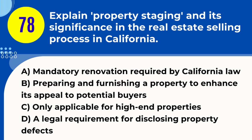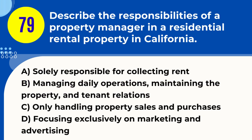Question 78. Explain property staging and its significance in the real estate selling process in California. A. Mandatory renovation required by California law. B. Preparing and furnishing a property to enhance its appeal to potential buyers. C. Only applicable for high-end properties. D. A legal requirement for disclosing property defects. Answer: B. Explanation. Property staging in California involves preparing and furnishing a property in a way that enhances its appeal to potential buyers. It can involve decluttering, rearranging furniture, and adding decorative elements to make the property more attractive. Staging can help a property sell faster and for a higher price by showcasing its best features and helping buyers visualize living there.